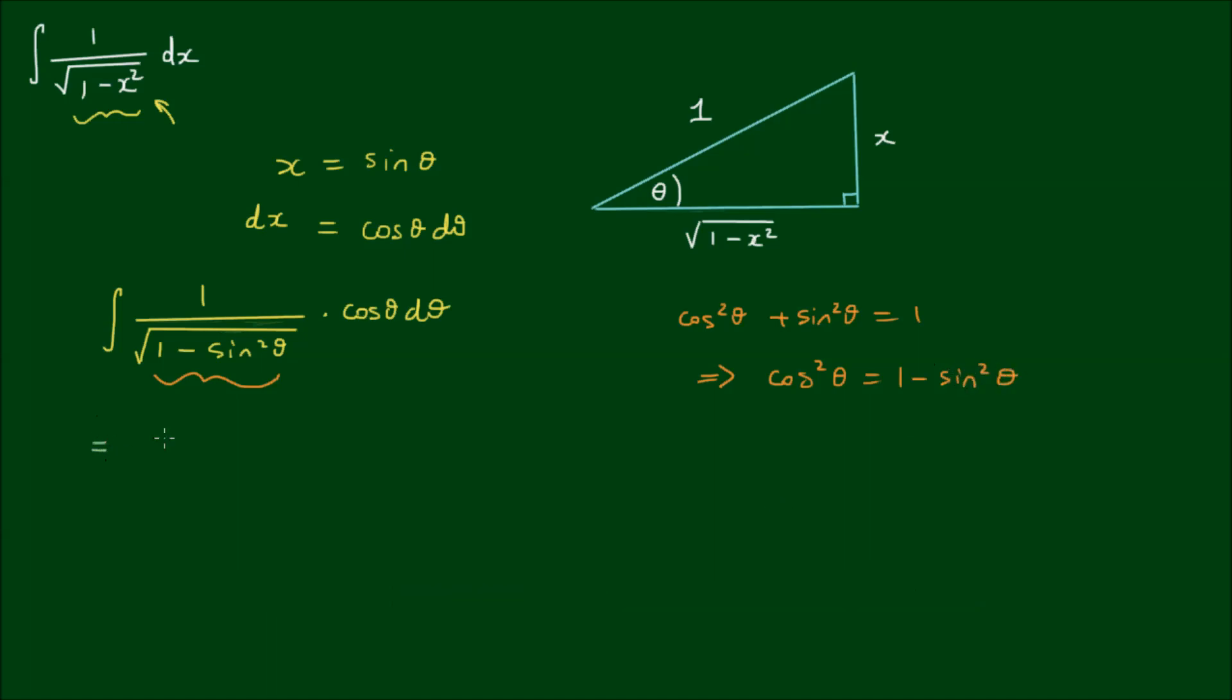So it's now equal to the integral of cosine of theta over the square root of cos squared theta d theta. So the square root and the square cancels out.